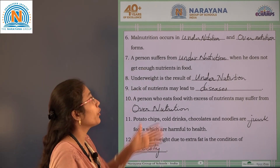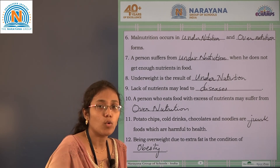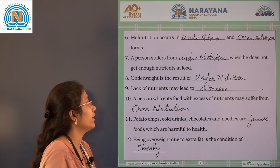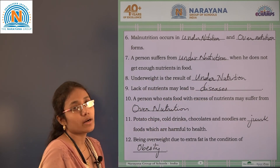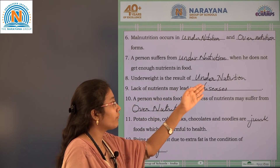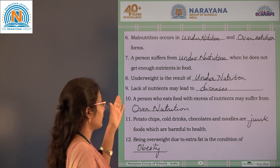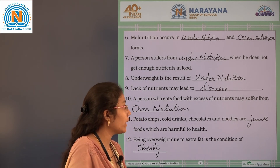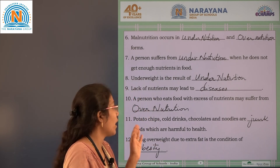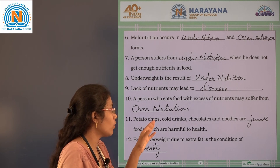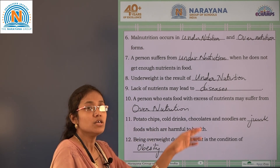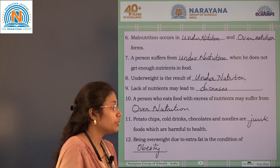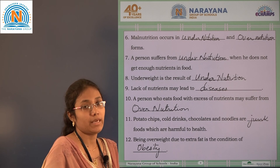Let us revise: malnutrition occurs in undernutrition and overnutrition. A person suffers from undernutrition when he does not get enough nutrients. Underweight is a result of undernutrition. Lack of nutrients may lead to diseases. A person who eats food with excess nutrients may suffer from overnutrition. Potato chips, cold drinks, chocolates, and noodles are junk foods not good for health. Being overweight due to extra fat is a condition of obesity. Thank you.